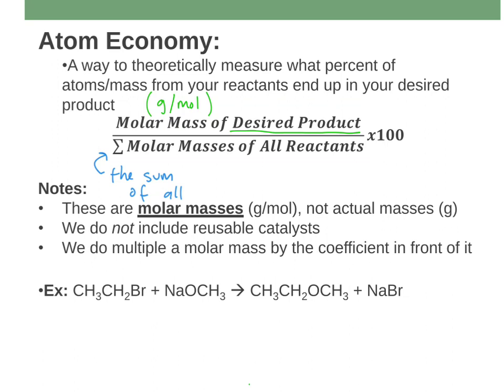A couple of notes: these are molar masses — grams per mole — not the actual mass of something. You don't need to actually do a reaction to calculate the atom economy. This is just a theoretical exercise; you could calculate it for any reaction right now at home. You don't need to go into a lab or get an actual yield. This is different than percent yield — you don't have to do the reaction. These are just molar masses from the periodic table, so you don't need to know how much you weigh out.